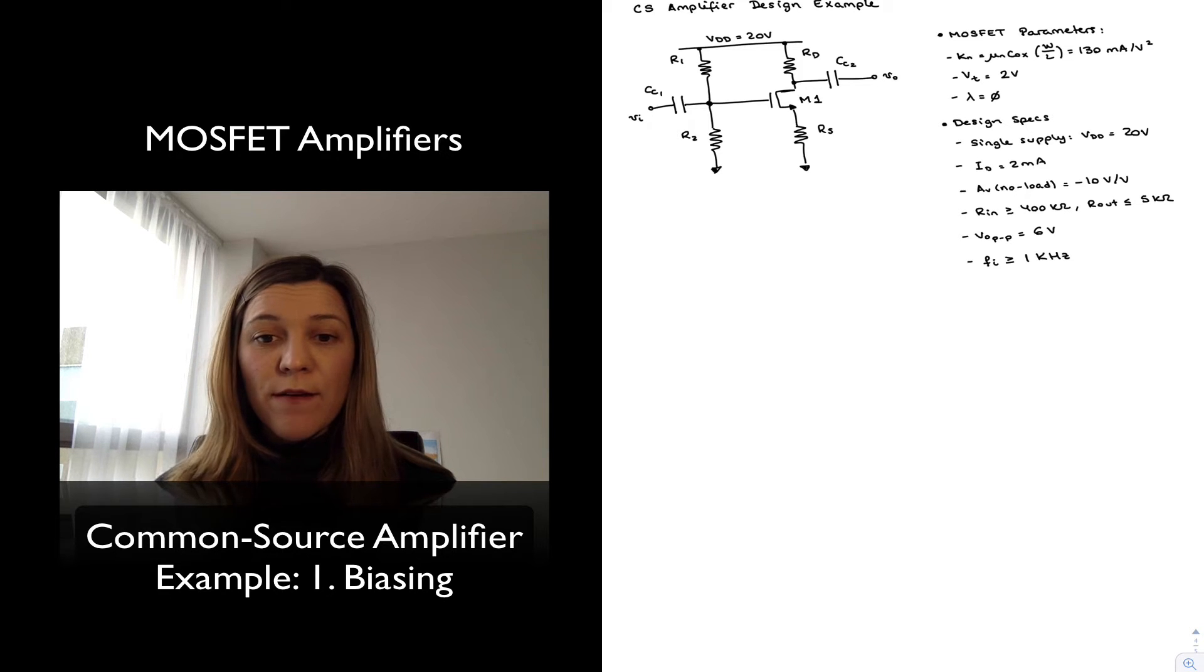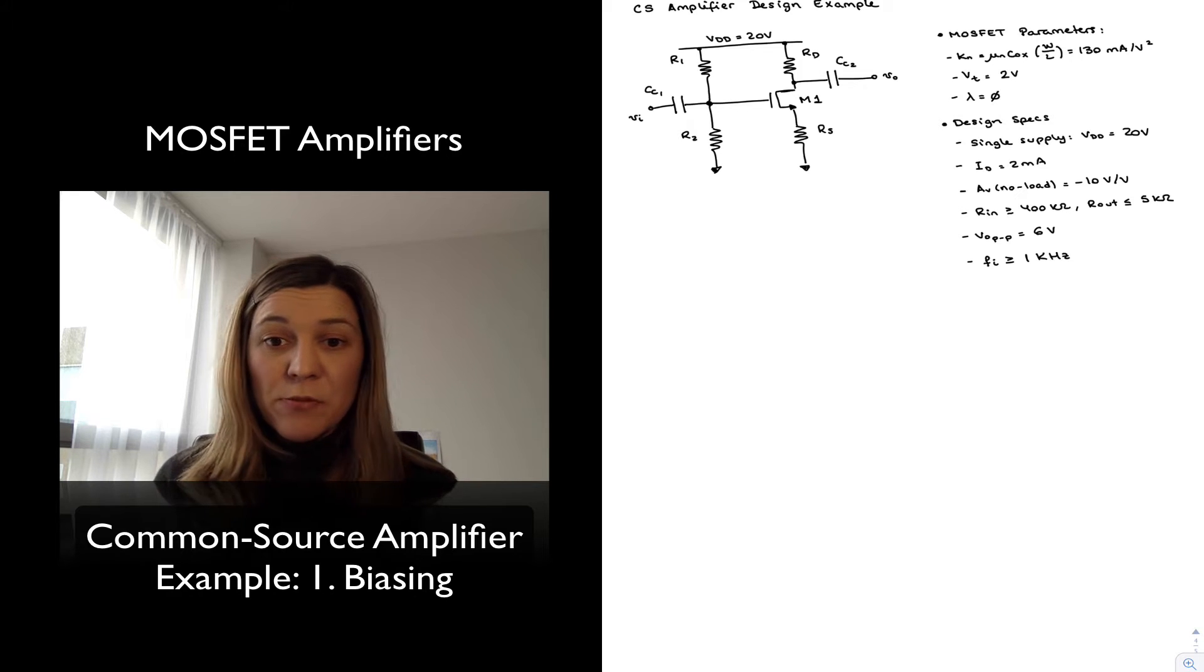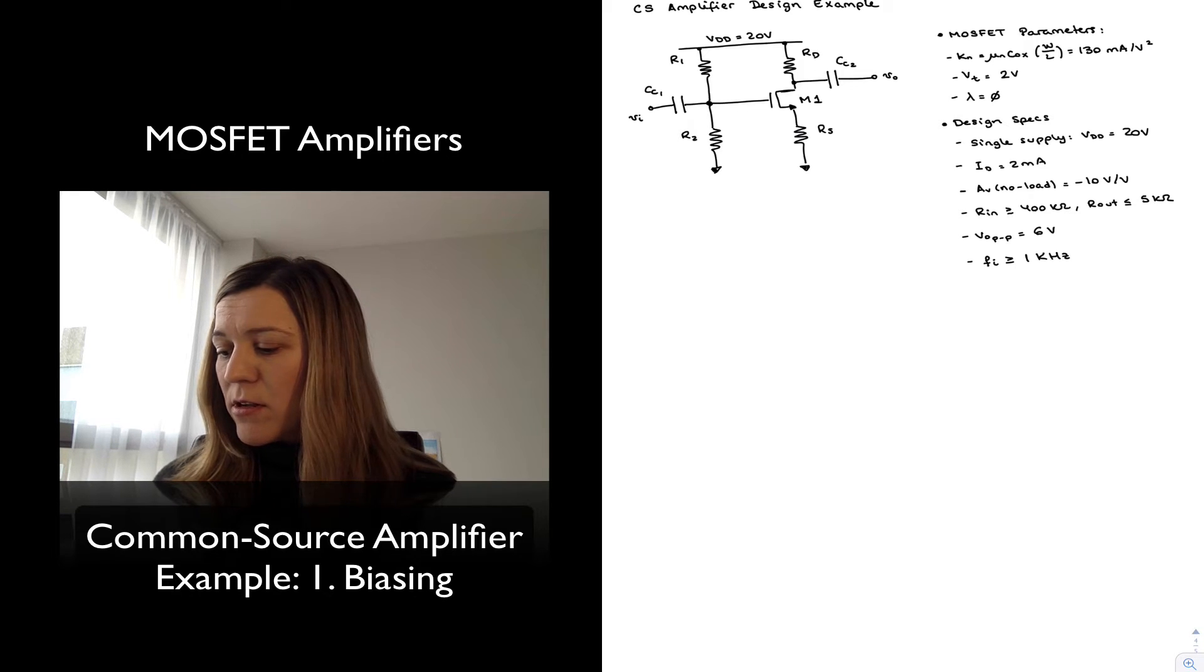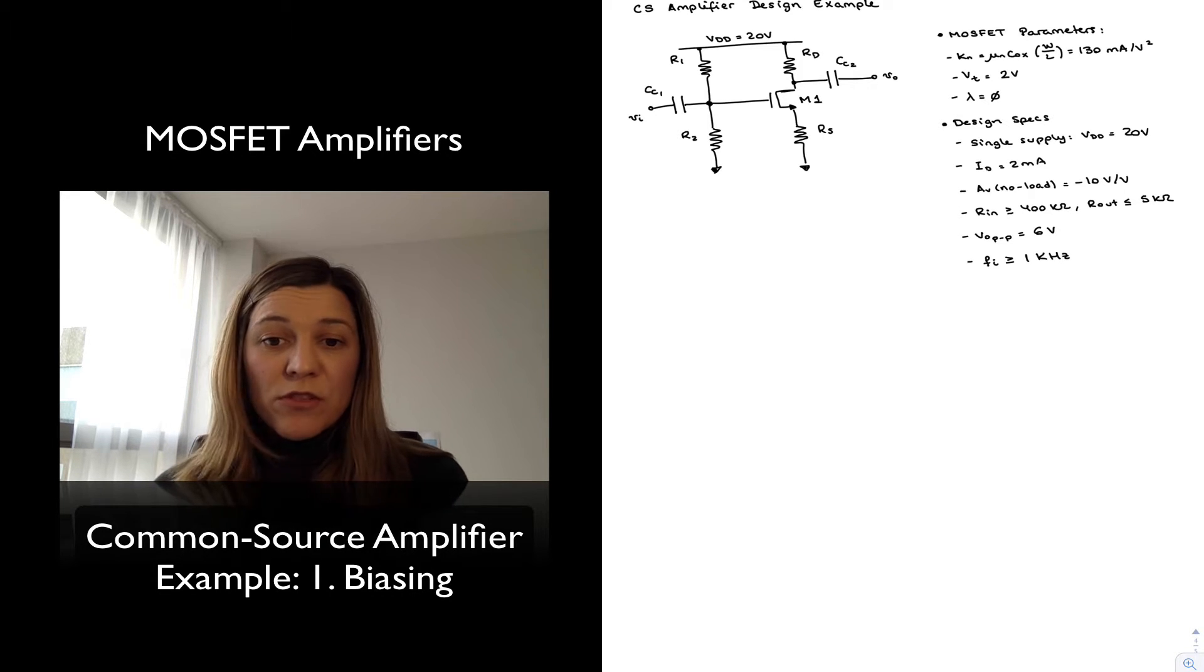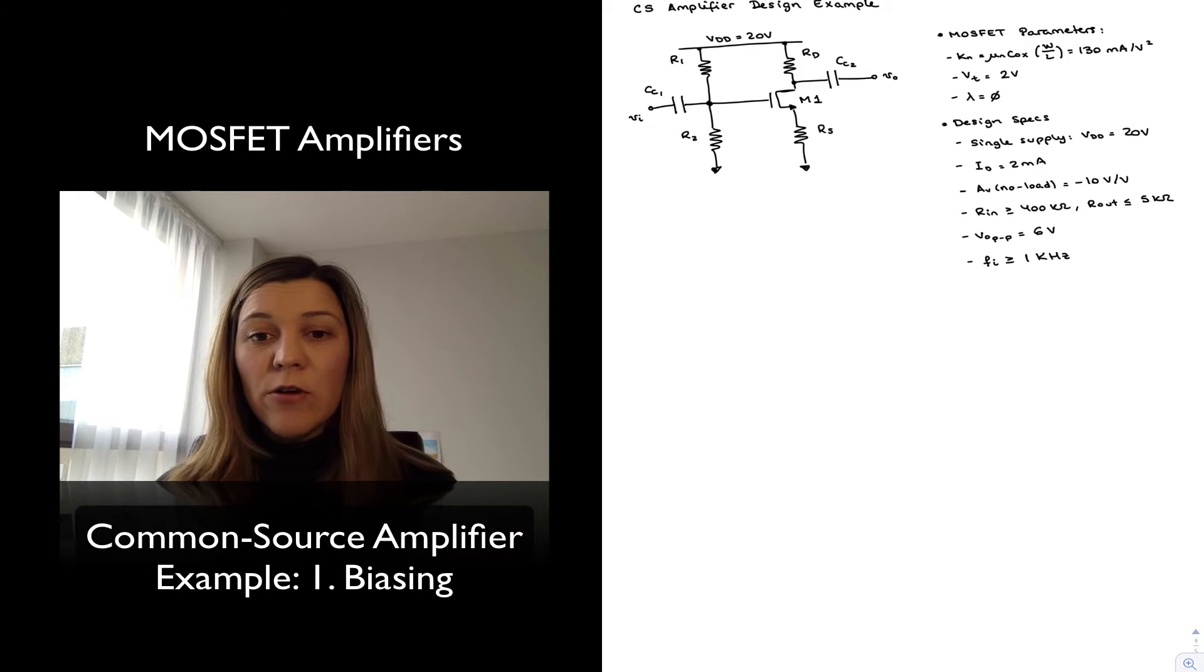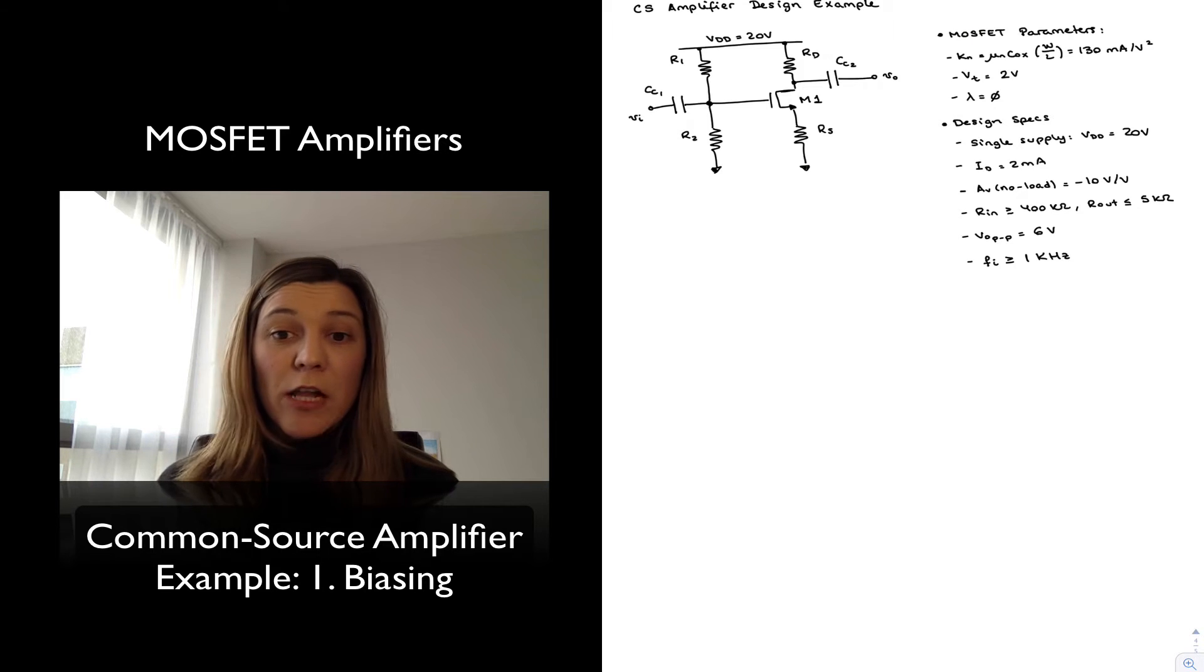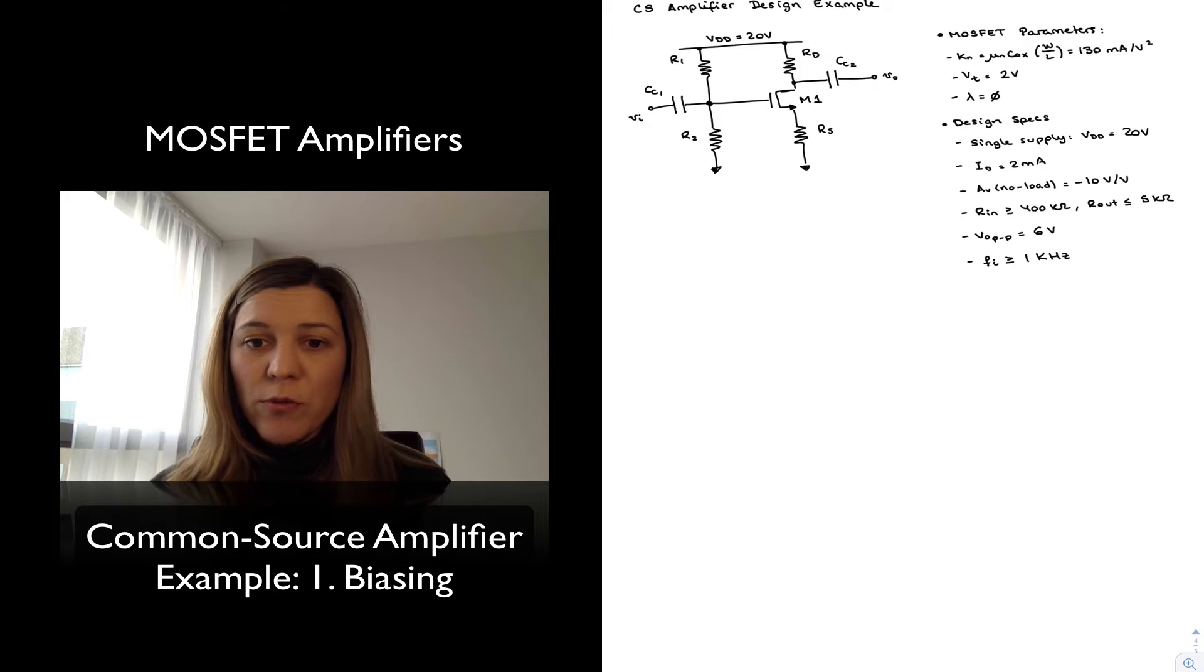Peak-to-peak output voltage is 6 volts. My input signal frequency I expect for my signals of interest is going to be greater than or equal to 1 kilohertz. That piece of information is going to help me decide what are the right values for my CC1 and CC2 capacitors.